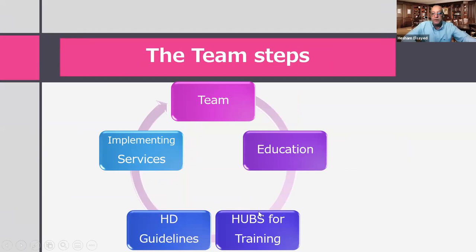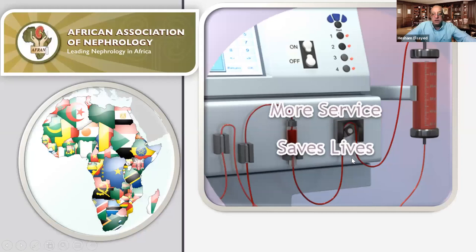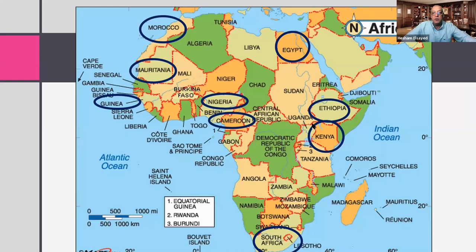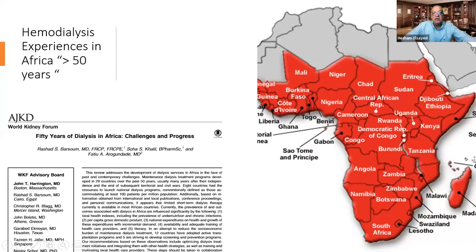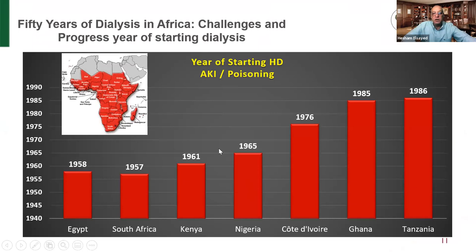The team steps will include education and, when possible, physical training hubs and guidelines. In Africa, more service will save lives. We hope to implement more service to countries facing travel and logistics challenges for hemodialysis. Within the next year we can establish training hubs in the north, west, east, and south. African countries have a long experience with both acute and chronic dialysis patients.